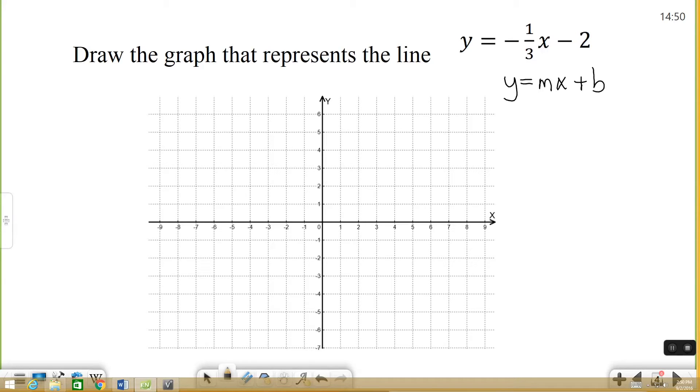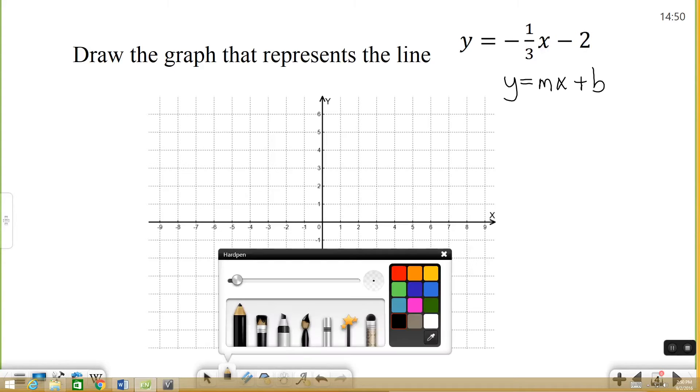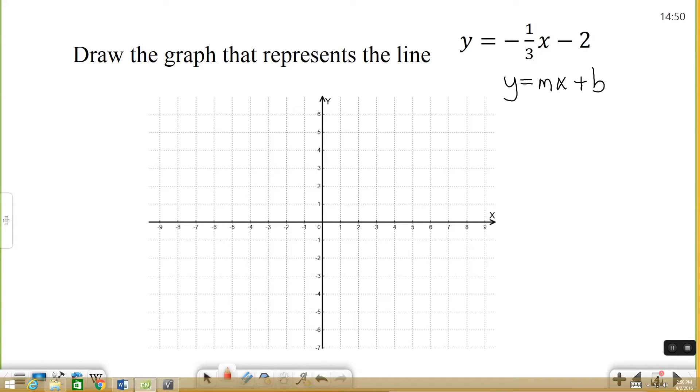So in my equation, the y-intercept is negative two. So I'm going to go to my y-axis. I'm going to change colors here. I'm going to find negative two on the y-axis, which is right here. I'm going to draw a dot.